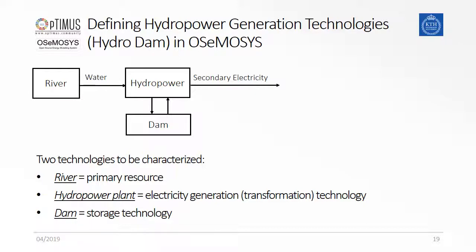Modeling hydro dams is slightly more complex than modeling runoff river power plants. Let's therefore first have a look at what technologies and fuels are needed in Osmosis to represent a dam. In total, two technologies, one storage unit, and two fuels are needed. The first technology can be called river and represents the source of water. The second technology, here called hydropower, can either fill the dam or use the stored water from the dam to generate electricity. The detailed parameterization will be described on the following slides.